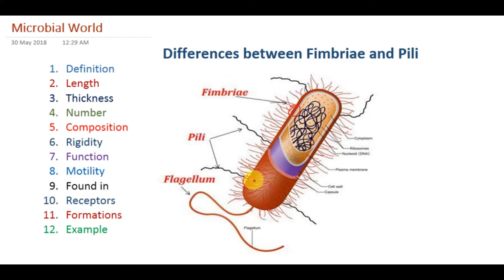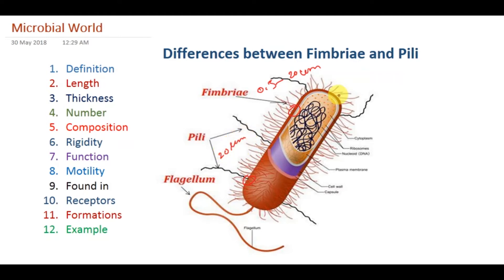As I said in my last lecture, pili is shorter than flagella. But today I'm saying fimbriae is smaller than pili — so fimbriae is the smallest, pili is in the middle, and flagella is the longest. Regarding length, fimbriae is normally 0.3 to 20 micrometers and never exceeds 20 micrometers, while pili is normally around 20 micrometers or more.